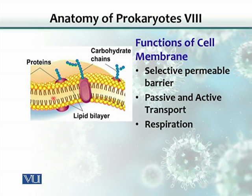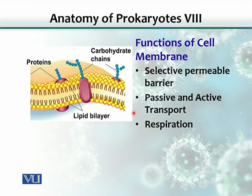The cell membrane is basically a semi-permeable or selectively permeable barrier. It allows certain substances to pass through, but does not allow others. There are two kinds of movement across the cell membrane: one is passive, where no energy is required, and the other is active transport, where energy is required.